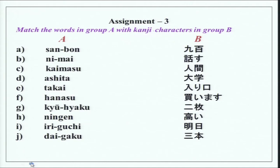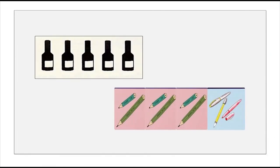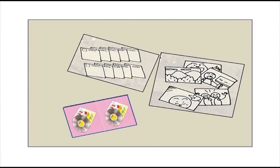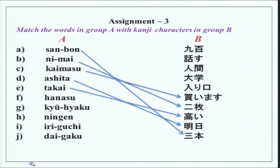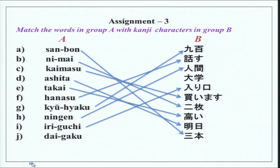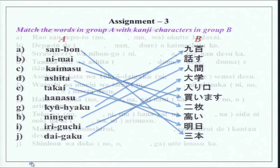Now match group A with group B. Sanbon — bon is the counter for long cylindrical objects. Nimai — mai is the counter for flat objects, as in the first assignment. Kaimasu. Ashita. Takai — takai means both 'expensive' and 'high' in terms of height. Hanasu. Kyuhyaku. Ningen. Iriguchi — you can see iriguchi has a ri; sometimes it is written like this and sometimes without the ri. Daigaku — a big place of learning.